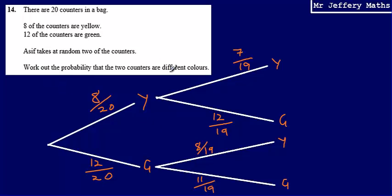So, we're asked to work out the probability that the two counters are different colors. Well, that could happen in one of two ways. He could choose a yellow and then a green, or he could choose a green, then a yellow. So, the probability of this happening would be 8 over 20 multiplied by 12 over 19. The probability of this one happening would be 12 over 20 multiplied by 8 over 19.